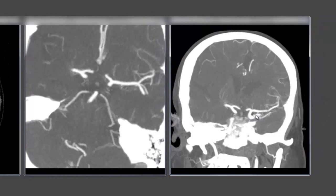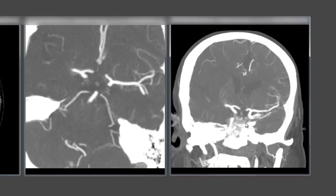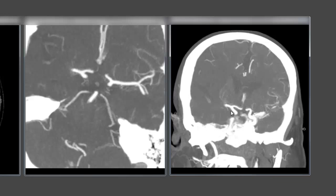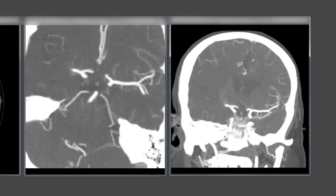That's just as well, if not better, seen on the coronal thick MIPs reconstructions. We can identify the top of the carotid with the normal left MCA, the top of the carotid on the right side, and the hard cutoff.